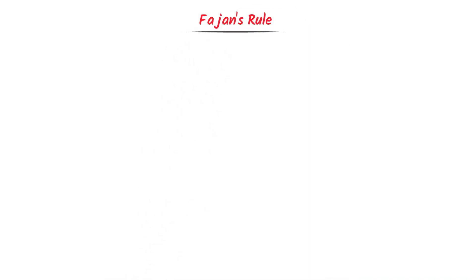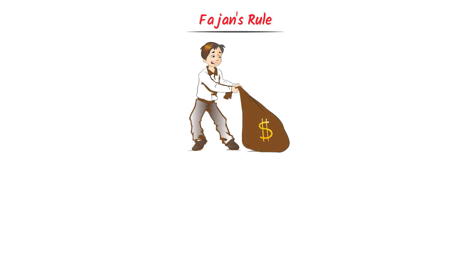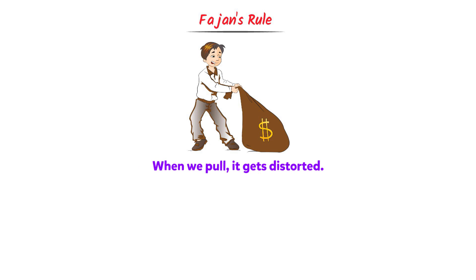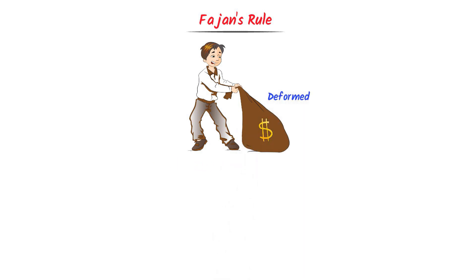To learn Fajans' Rule, let me give you one example. Consider this man pulling this sack. We know that when we pull something soft, it usually gets distorted or deformed. Similarly, this man is pulling this sack and it gets deformed.